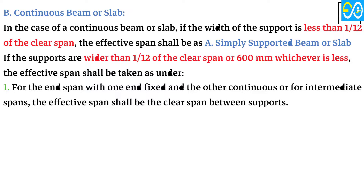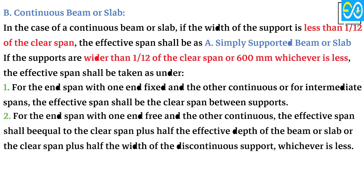1. For the end span with one end fixed and the other continuous, or for intermediate spans, the effective span shall be the clear span between supports. 2. For the end span with one end free and the other continuous, the effective span shall be equal to the clear span plus half the effective depth of the beam or slab, or the clear span plus half the width of the discontinuous support, whichever is less.